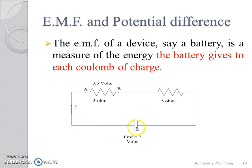Thus, if a battery supplies 7 Joules of energy per Coulomb, we say that it has an EMF of 7 Volts. The energy given to each Coulomb in a battery is due to the chemical action taking place in the cell.